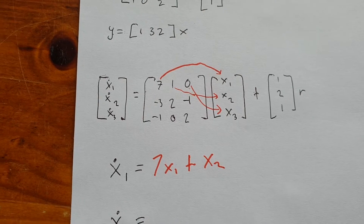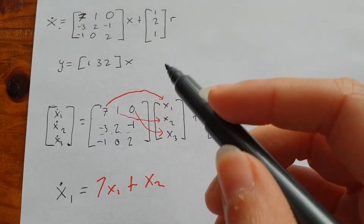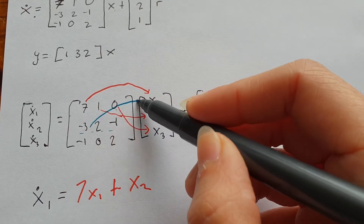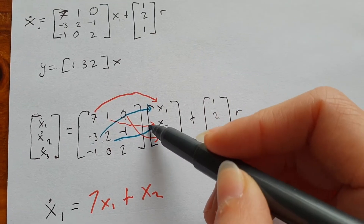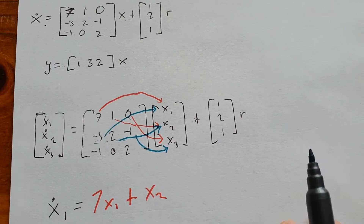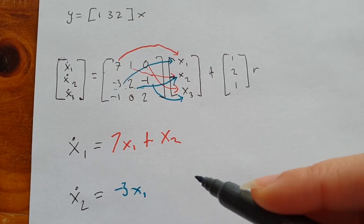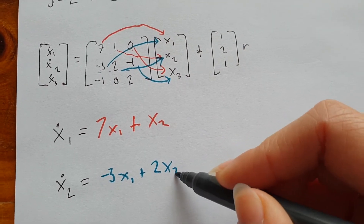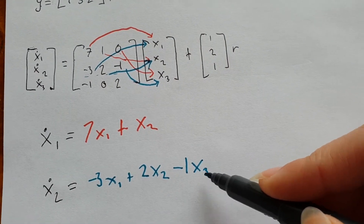For x_dot2, we're focusing on the second row. It's -3 times x1, 2 times x2, and -1 times x3. So we write: x_dot2 = -3x1 + 2x2 - x3. Of course you can write it without the 1.